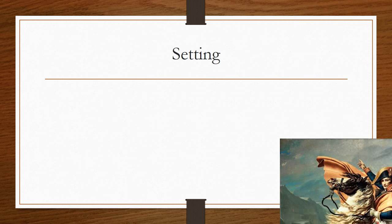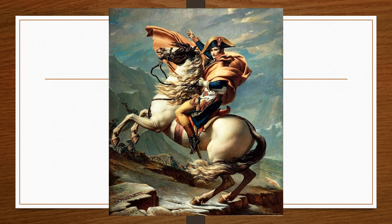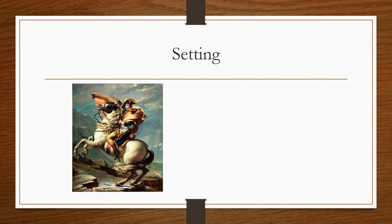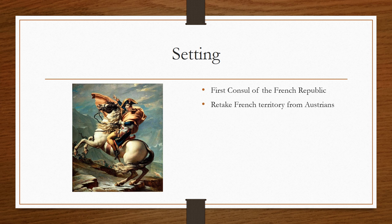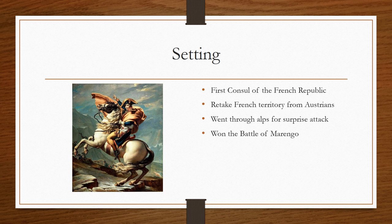Here's the actual painting Napoleon Crossing the Alps. Before we go into any detail, I want to give some historical context. He was the first consul of the French Republic and one of his goals was to retake French territory from the Austrians. The way he did that was by going through the Alps, through the Great St. Bernard Pass. With this voyage through the Alps, he had the element of surprise on his enemies, and because of that he was able to win the battle, later called the Battle of Marengo.